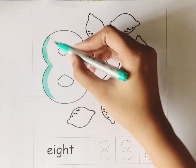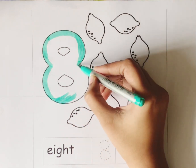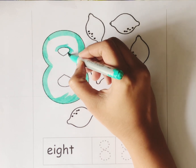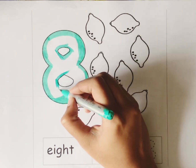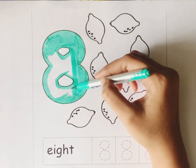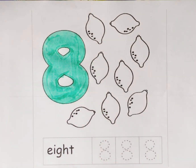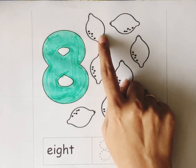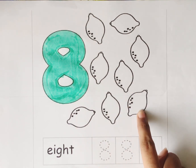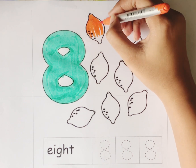Number 8. Let's color the number 8. Sea green color. Number 8. Let's count the total number of lemons: 1, 2, 3, 4, 5, 6, 7, 8. Total we have 8 lemons. Let's color the lemon.